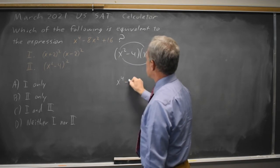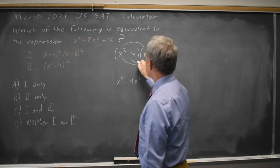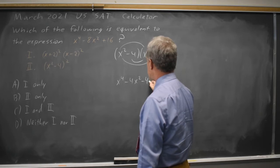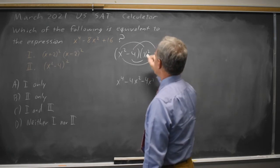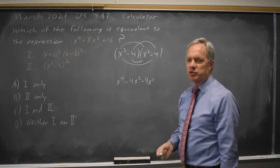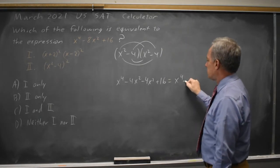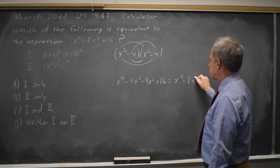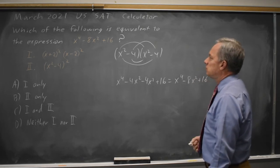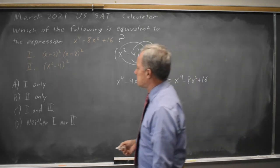The product of the outsides is minus 4x squared. The product of the insides is minus another 4x squared. And the product of the last, negative 4 times negative 4 is positive 16. And that simplifies to x to the fourth minus 8x squared plus 16, which matches our original expression.